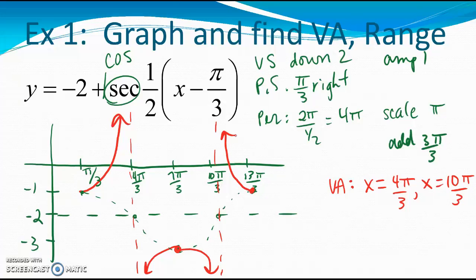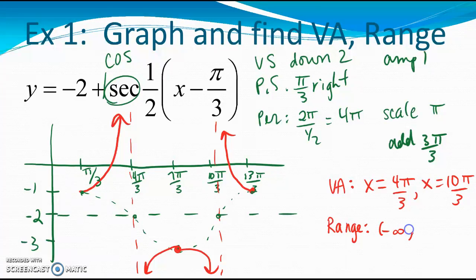We might also ask for domain and range. For this graph, the range is everything that the cosine range would not include. If this problem were cosine, the range would be negative 3 to negative 1. Since the secant graph goes in the opposite direction, the range is negative infinity to negative 3, union negative 1 to infinity. The domain is something we will address more in class.